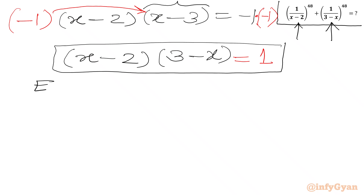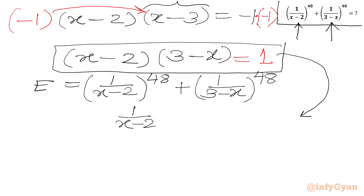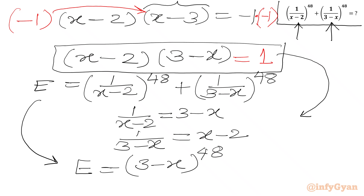Now we write our required expression E as 1 over (x minus 2) whole power 48, plus 1 over (3 minus x) whole power 48. From the equation (x minus 2)(3 minus x) equals 1, we divide both sides by (x minus 2) — since x cannot be 2 — to get 1 over (x minus 2) equals (3 minus x). Similarly, 1 over (3 minus x) equals (x minus 2). So E equals (3 minus x) to the power 48, plus (x minus 2) to the power 48.